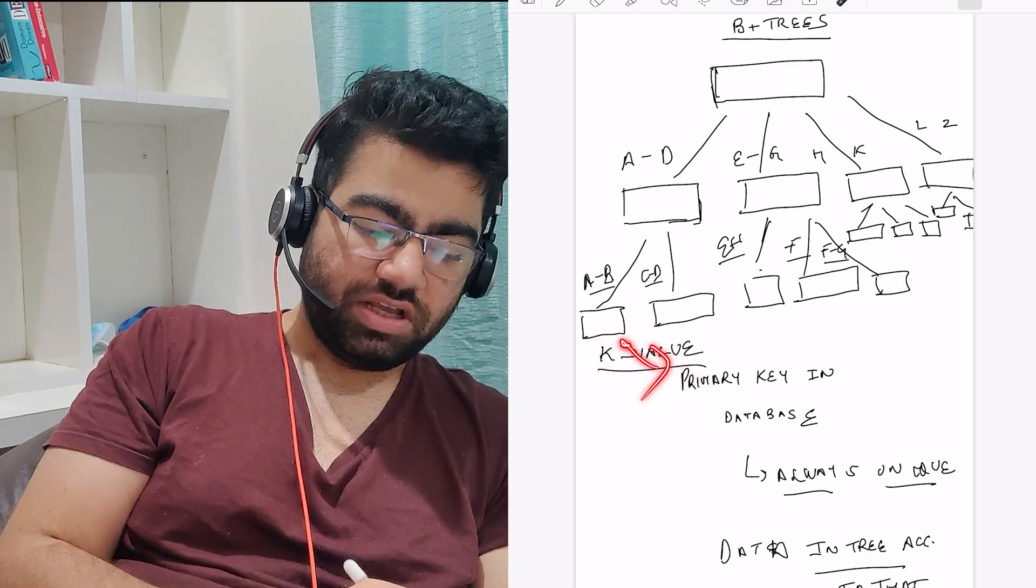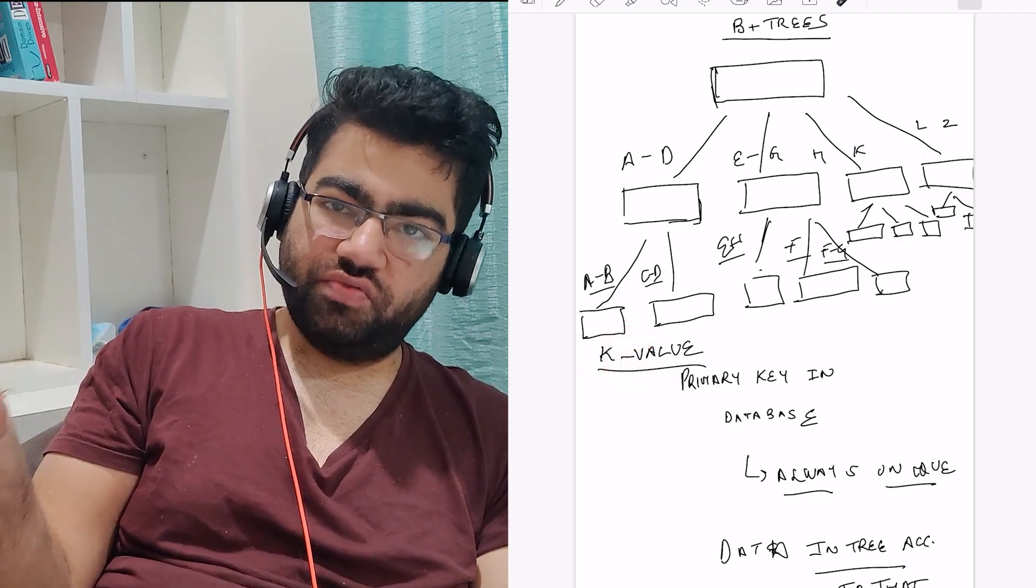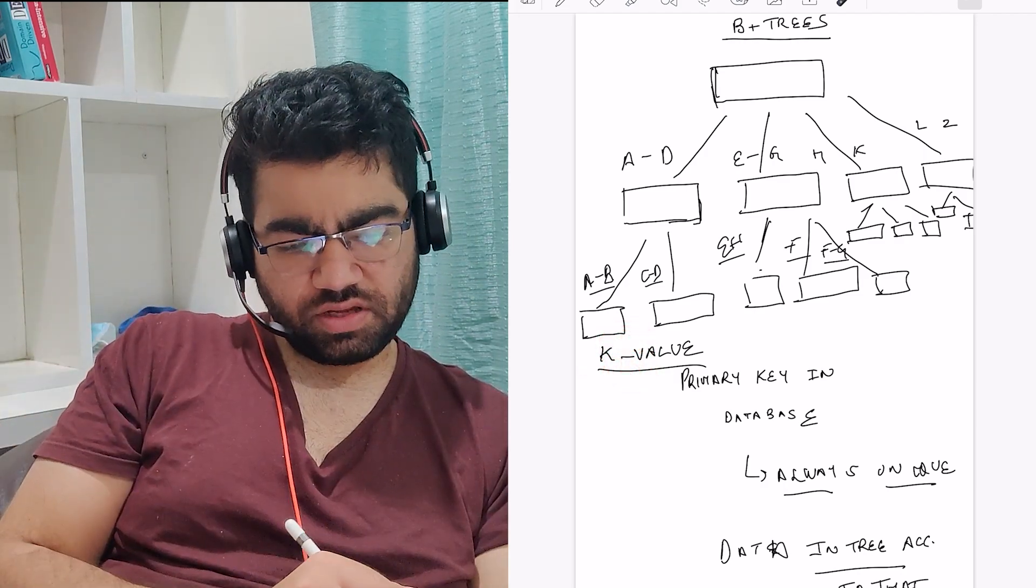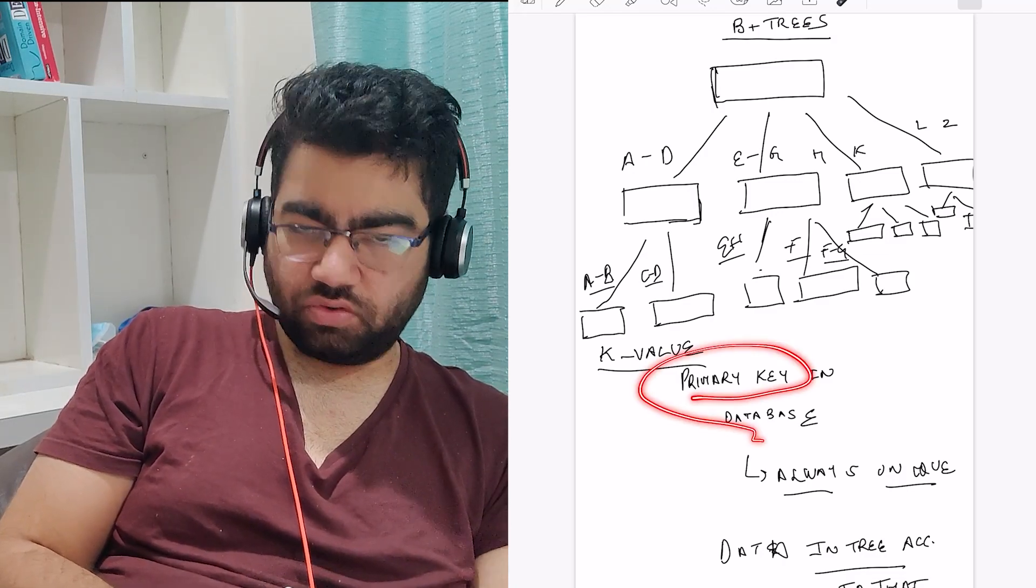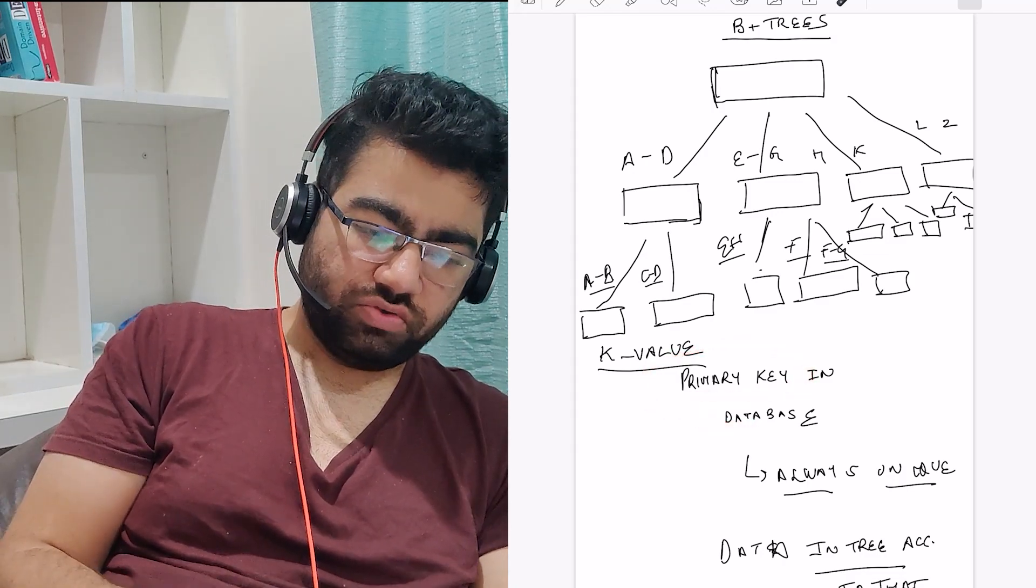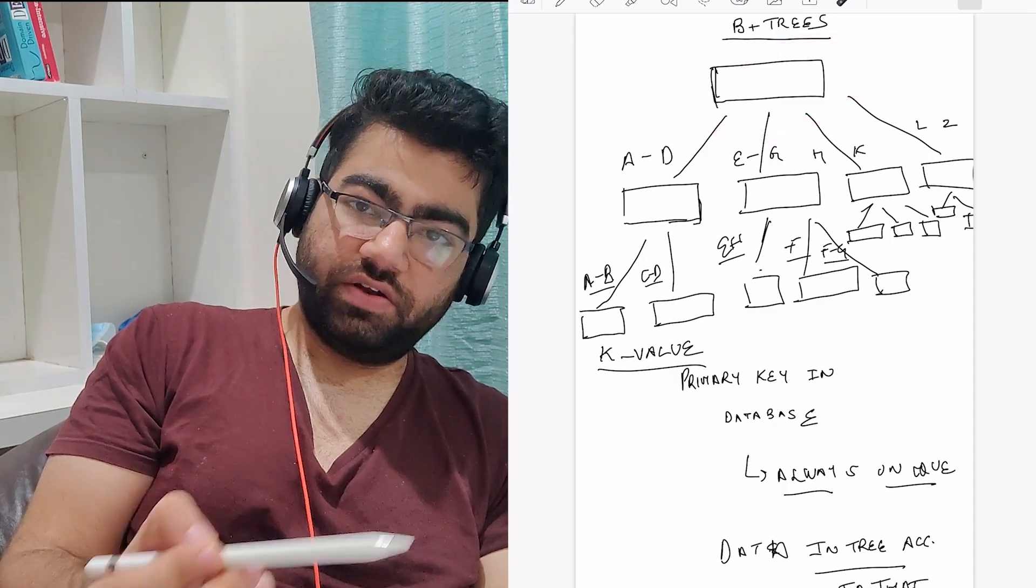Finally in the leaves we have the key-value and the corresponding value that is present, that is stored in the memory. Basically this would contain a pointer to the value which is stored. That's how you are able to search fast using a primary key.